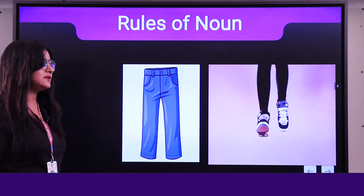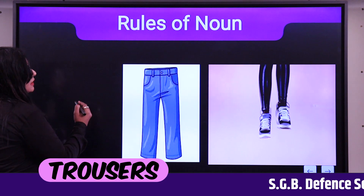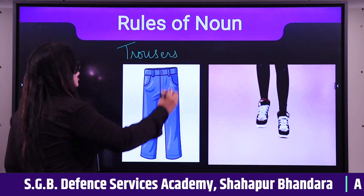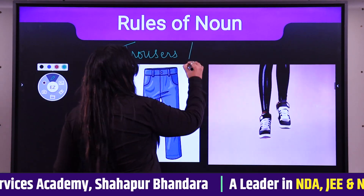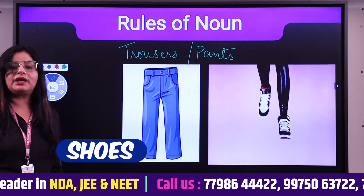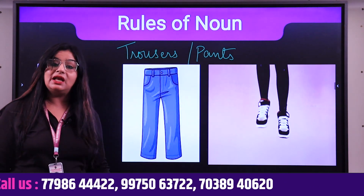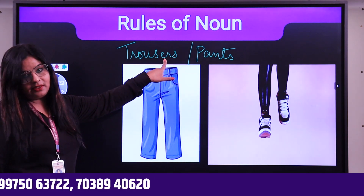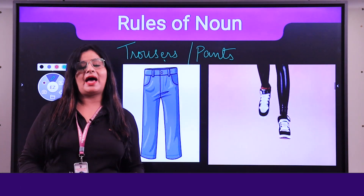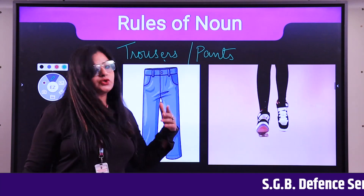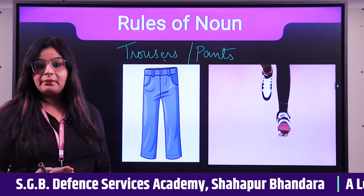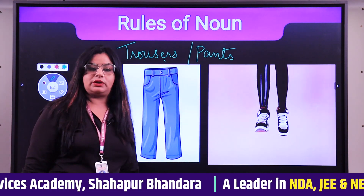Trousers (also called pants) are always written and treated as plural. No matter that a trouser is one item, we still write 'trousers' or 'pants' and count them as plural nouns. The same applies to jeans. These words — shoes, socks, trousers, jeans, pants — are always used in pairs, so they are always plural nouns.